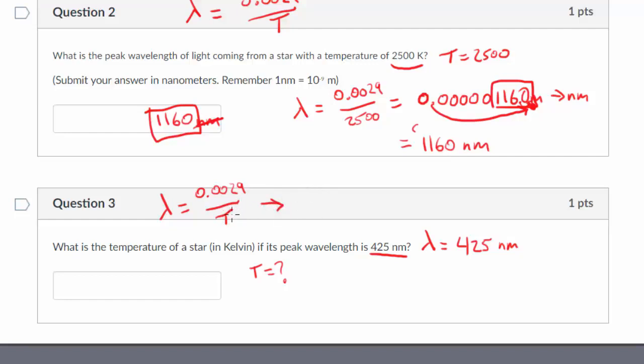So let's rearrange this equation to solve for temperature. To get temperature by itself, I need to multiply both sides by temperature. That cancels it out on this side. And I would have T times lambda equals 0.0029. And then to get temperature by itself, I would divide both sides by lambda. And so this is the alternate version of the equation. If you need to solve for temperature, it would be that temperature equals 0.0029 divided by lambda.